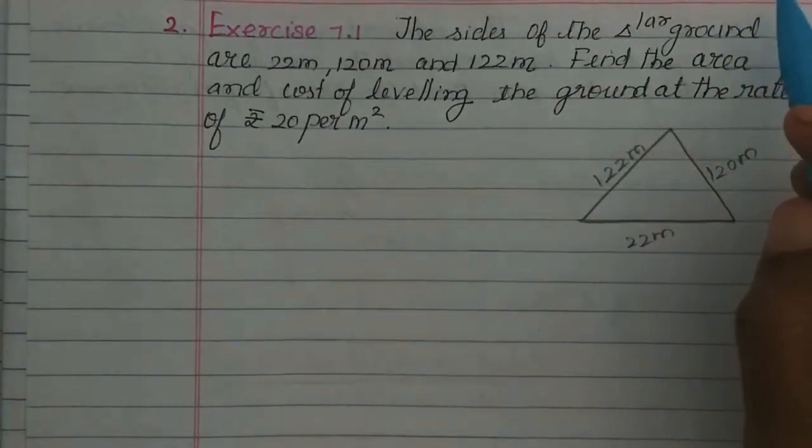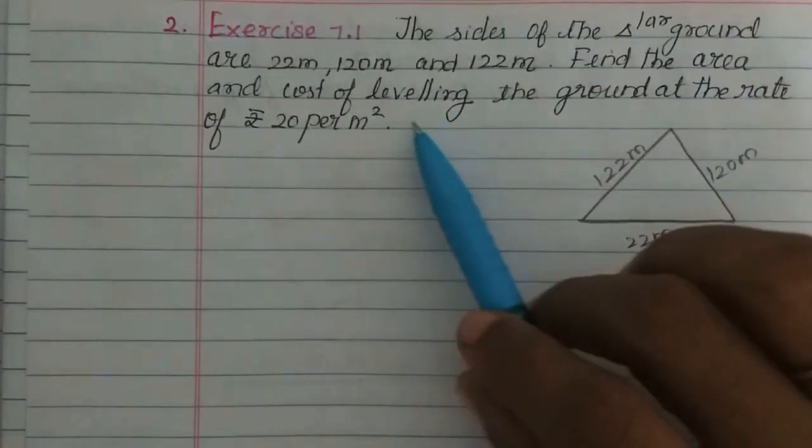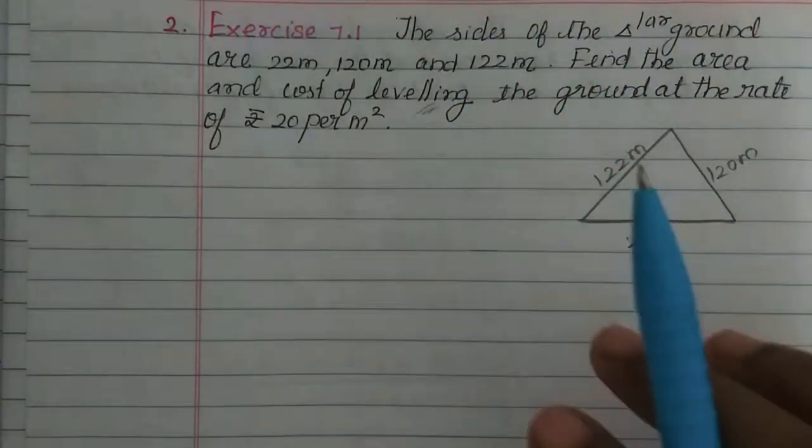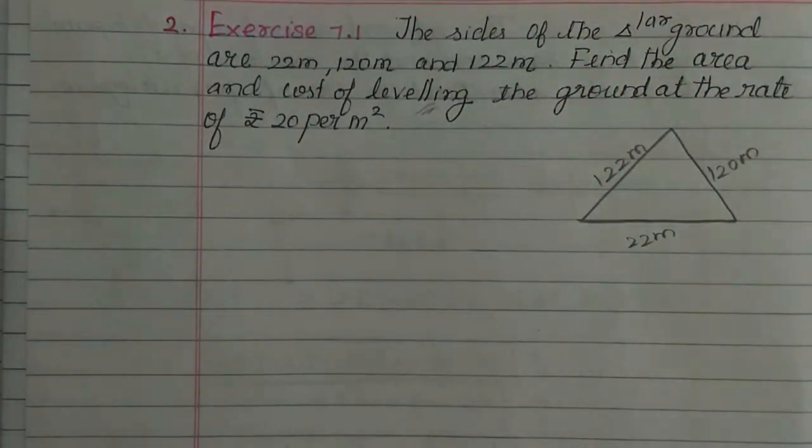First, area of the ground and cost of leveling. What is cost of leveling? If a ground is uneven, we make it even and flattened. That is the cost of leveling.